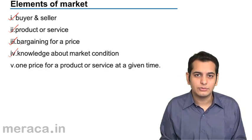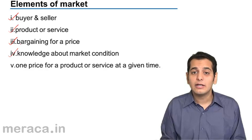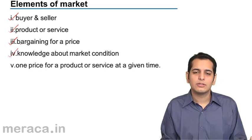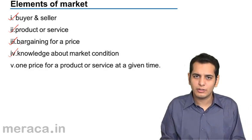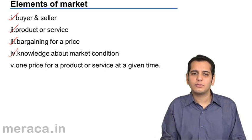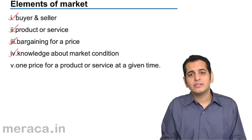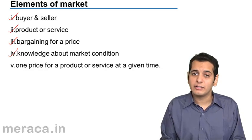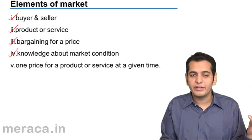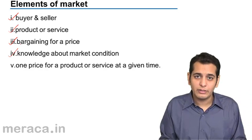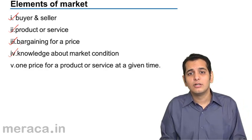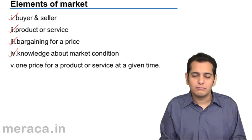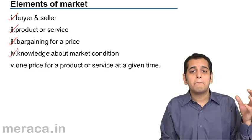Next, knowledge about market conditions. Both buyers and sellers generally tend to have a good amount of knowledge about market conditions, especially the sellers, because they are the ones in the market to sell the product, so they need to know in and out about the market. Buyers also need information about the market conditions — like the price of the product, the various sizes or colors which the sellers are offering, guarantees, warranties, or any schemes.